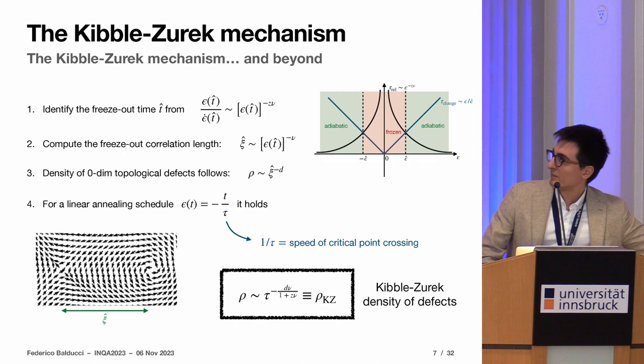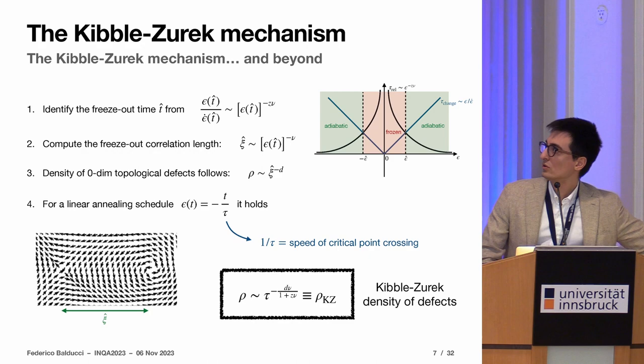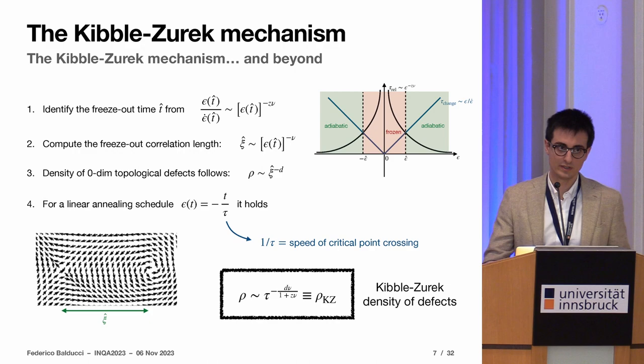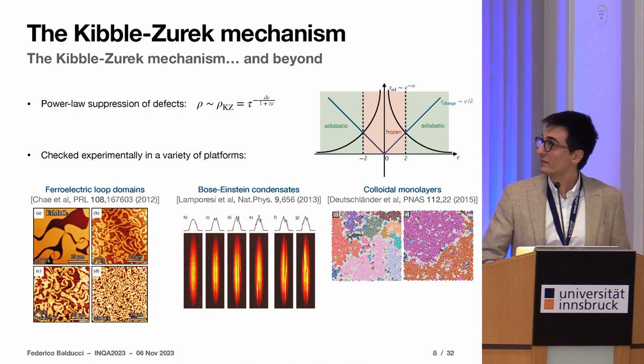Using this simple linear annealing schedule with a time tau that quantifies how fast you are going, you find this nice formula which is relating the density of defects found in a completely out of equilibrium protocol to critical exponents that are given by the equilibrium criticality. This is why this mechanism is important, because it's giving us out of equilibrium information from equilibrium information. This is the main formula predicted by the Kibble-Zurek mechanism.